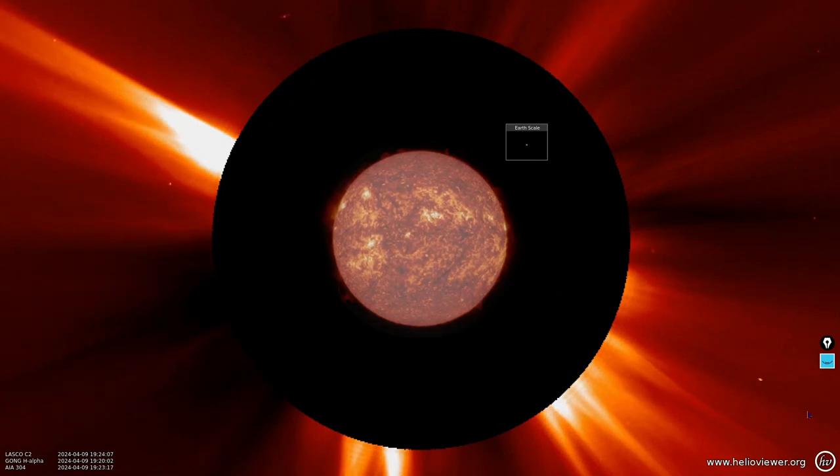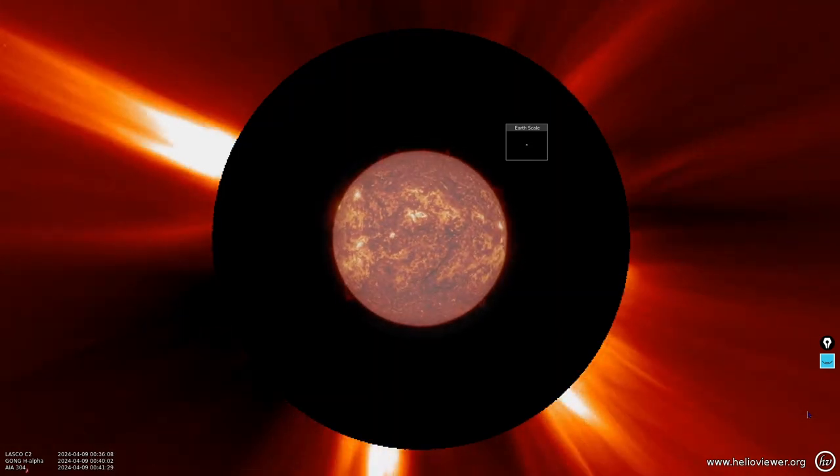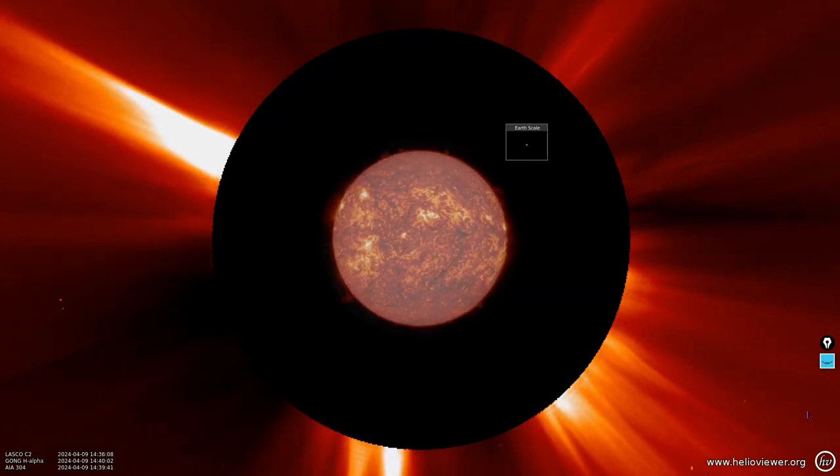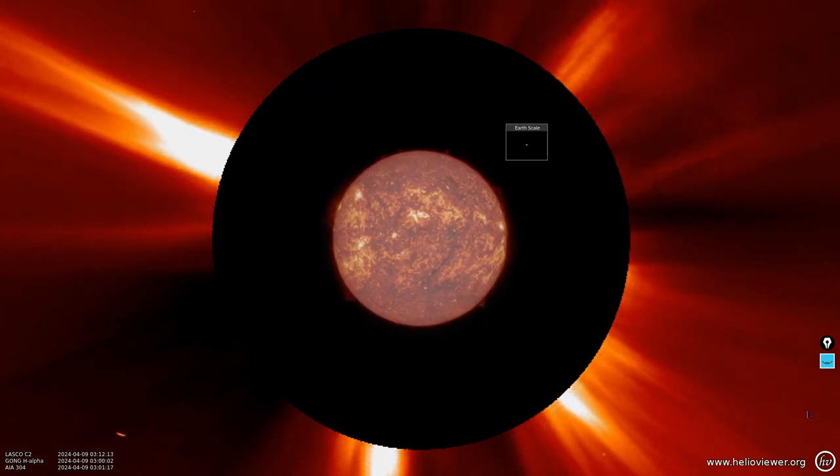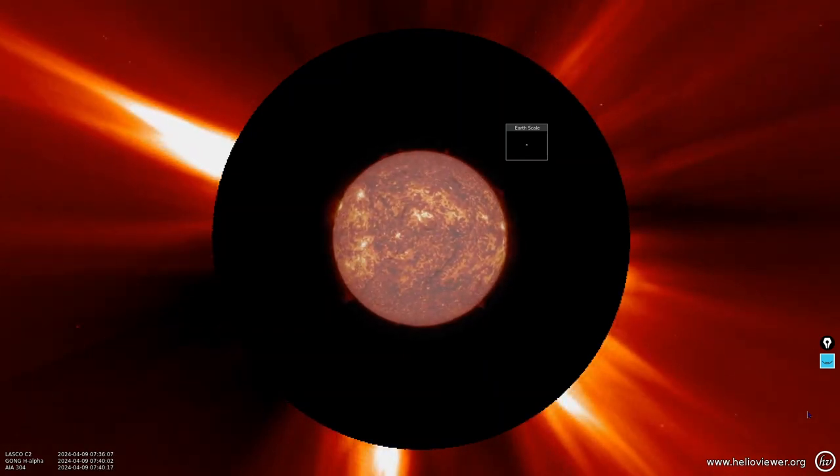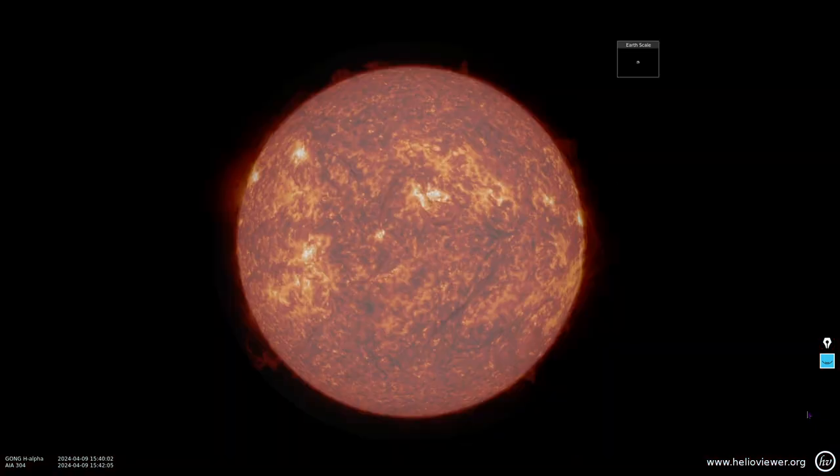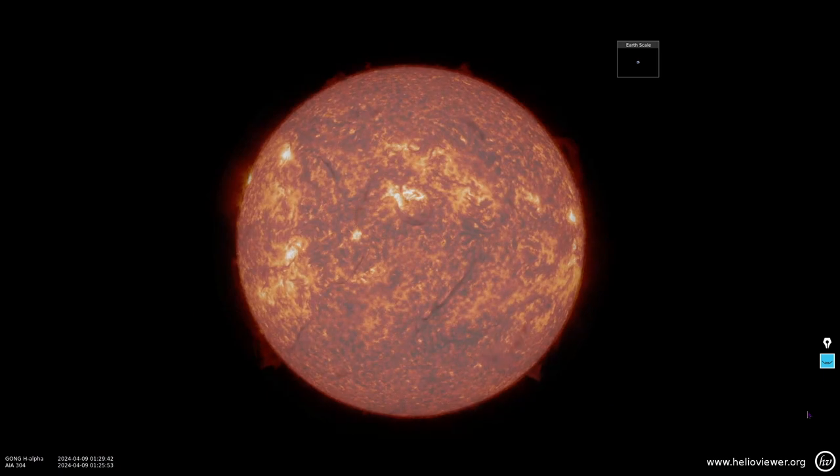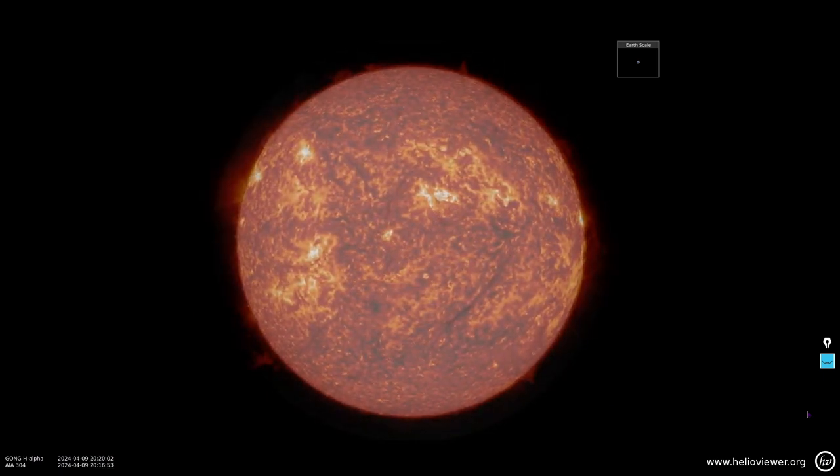Here comes some custom coronagraphs. Yeah, those are just not earthly directed events. Here we've added the GONG hydrogen alpha imagery to the 304 angstrom SDO. Keep in mind some of the anomalies you're seeing there are clouds because the GONG hydrogen alpha imagery is ground-based. Yeah, that wavelength makes it all the way to the ground level.